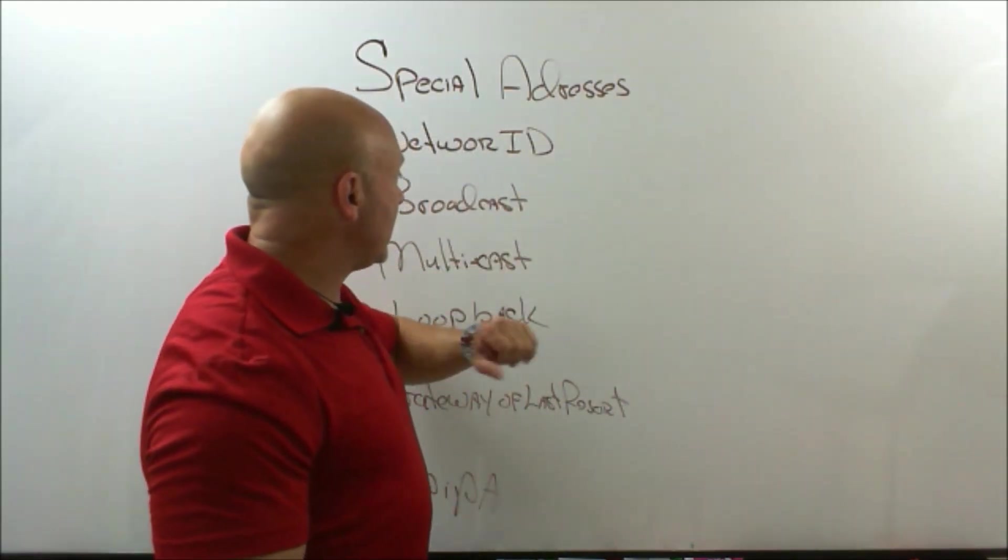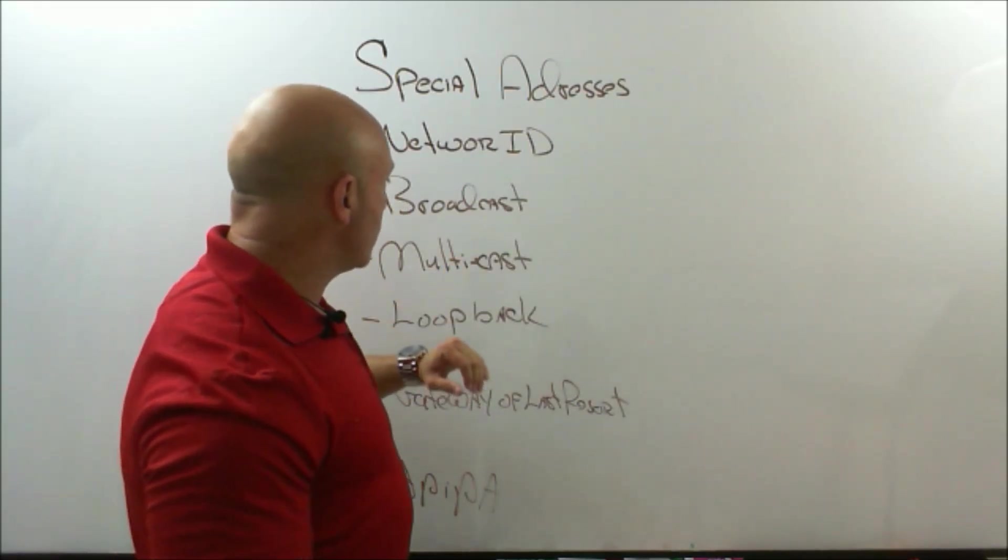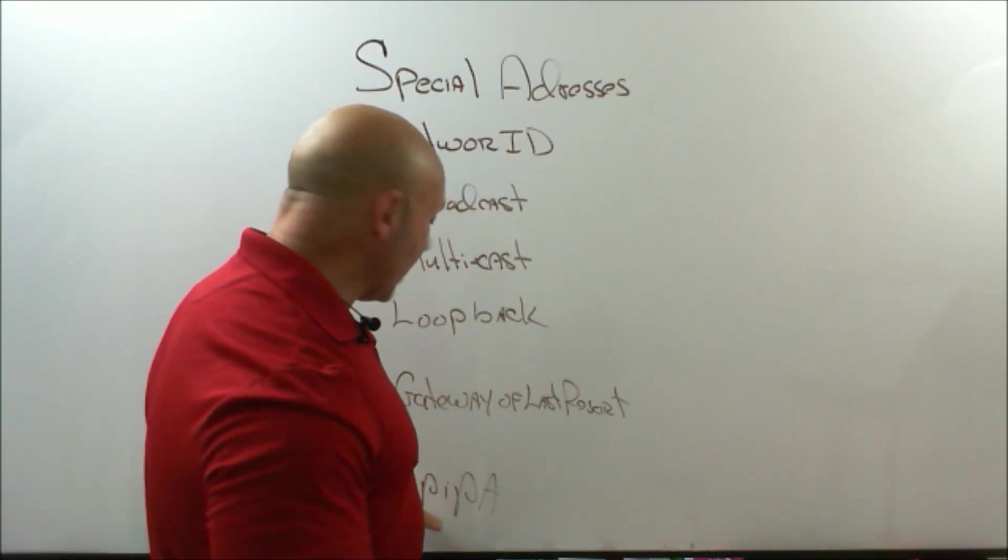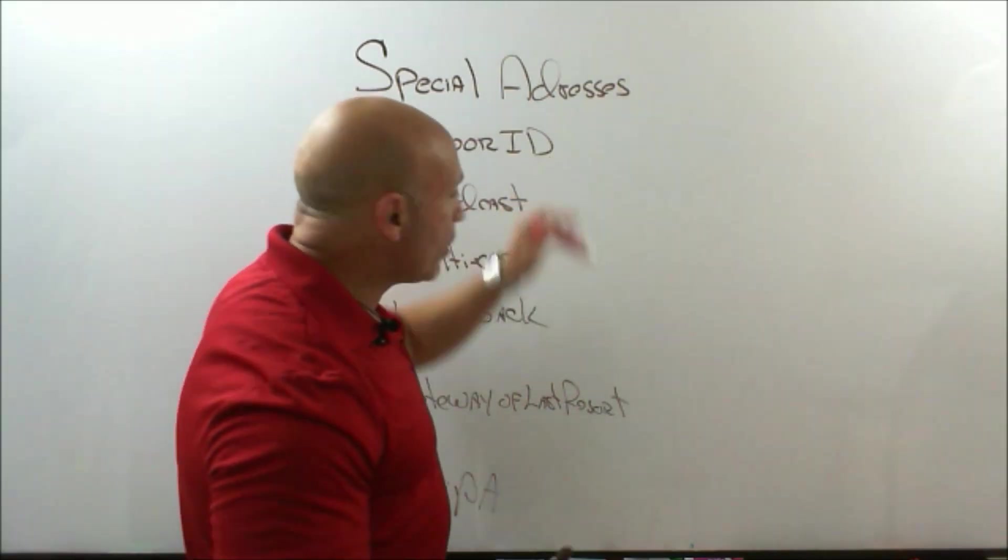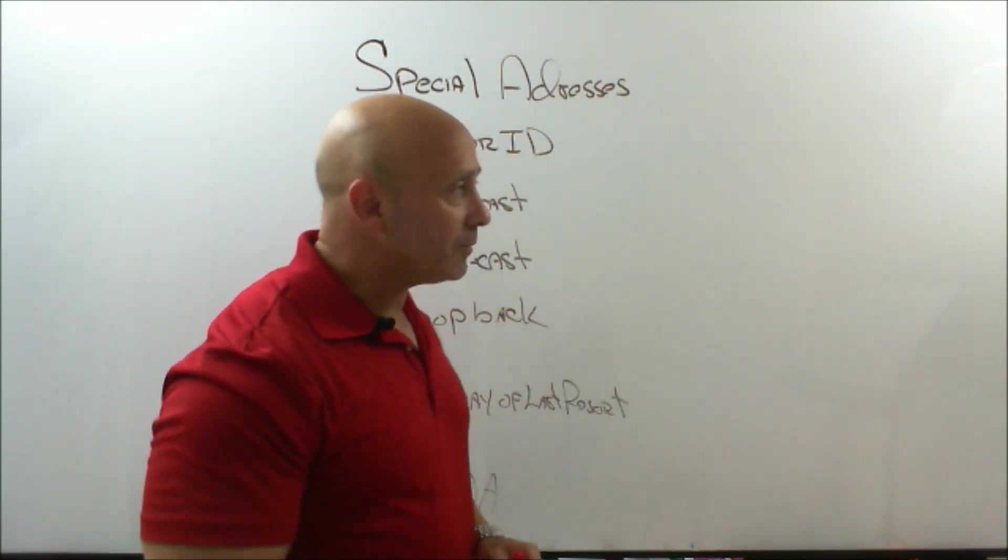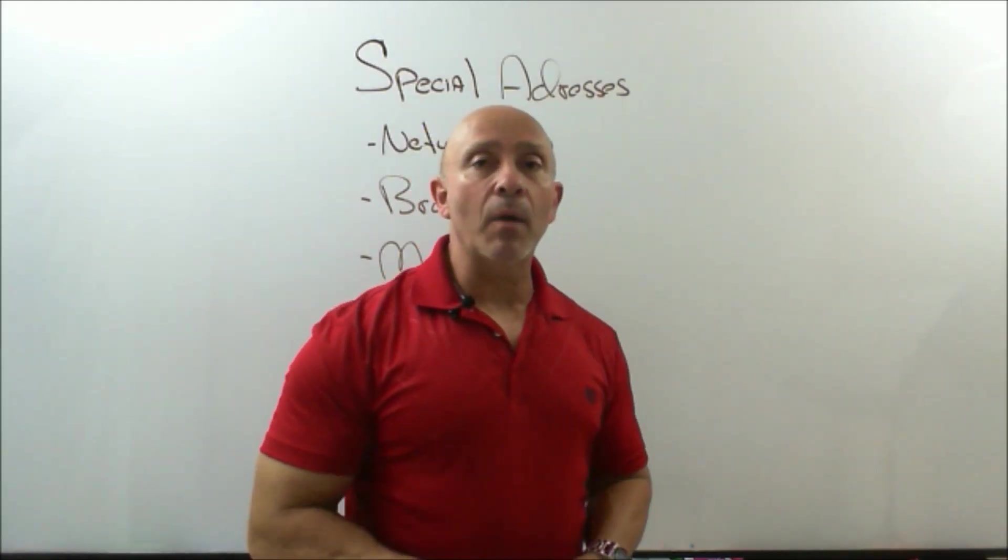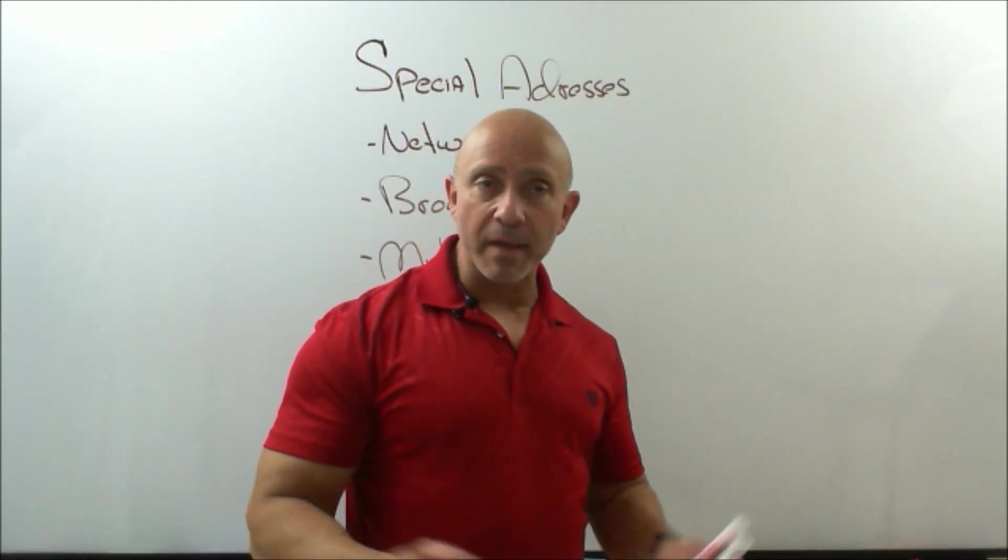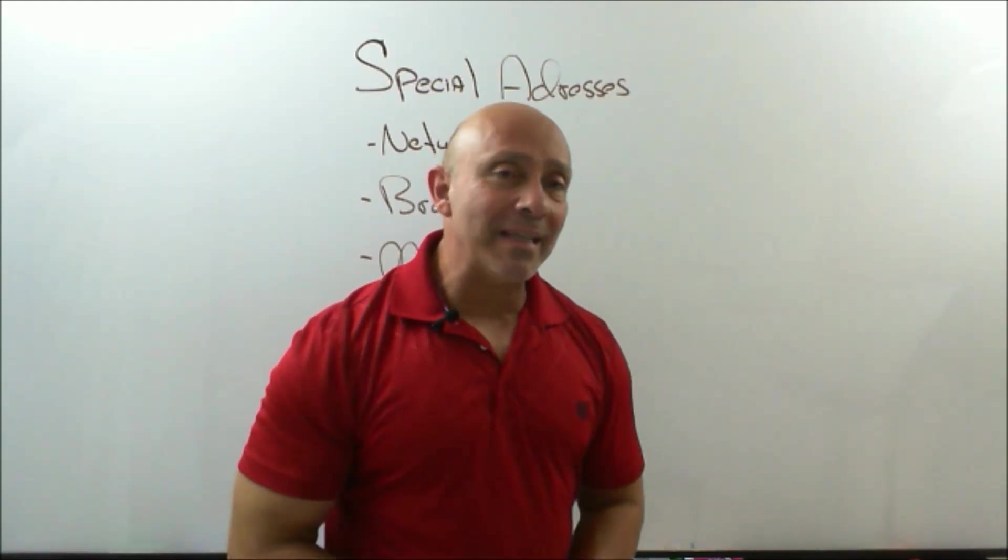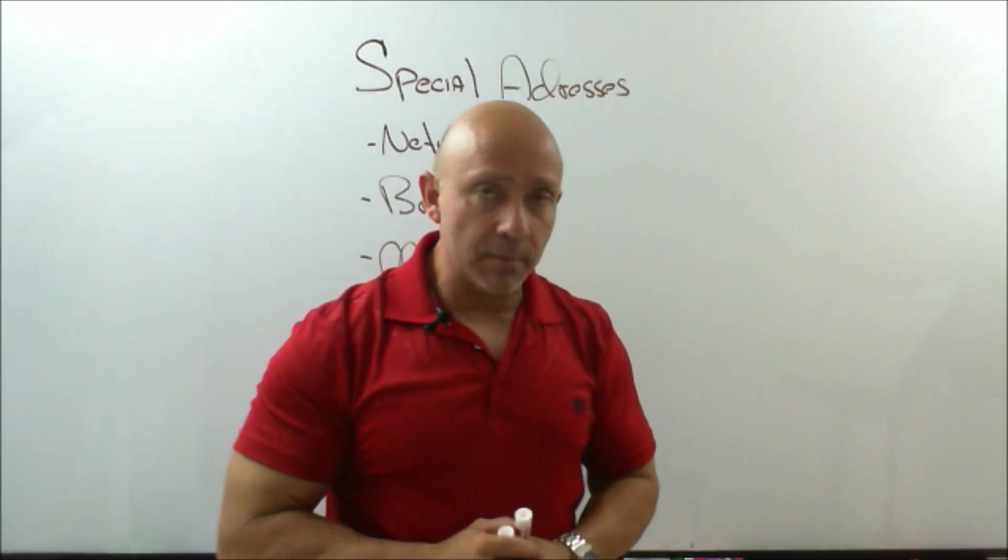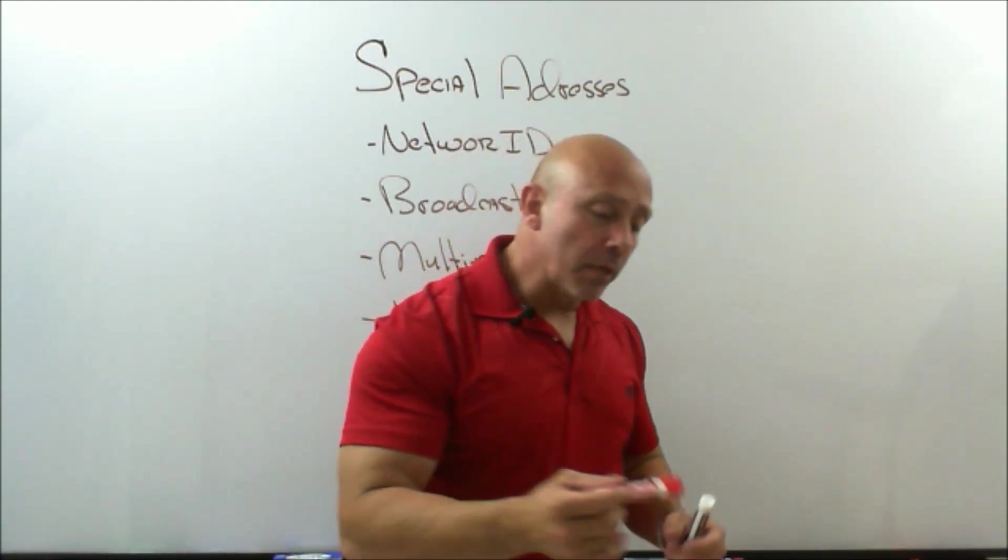Here, what we're going to look at is some special addresses. We have network ID, broadcast address, multicast, loopbacks, gateway of last resort, and APIPA. Network ID - what is the network ID? It's tricky. There are tricks. Network ID is usually an even number. But what the network ID is, it identifies what network, what neighborhood you live in.